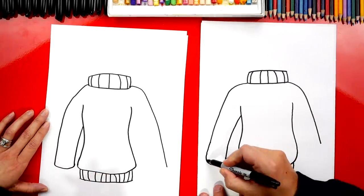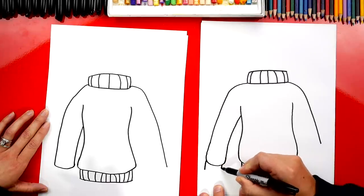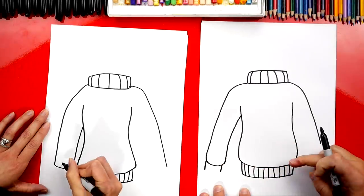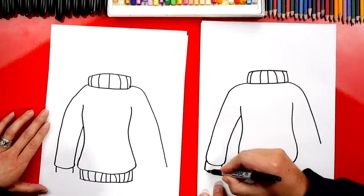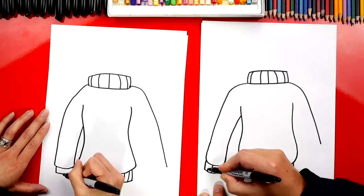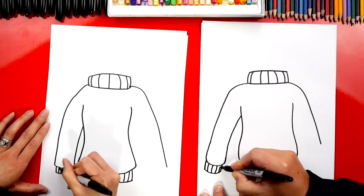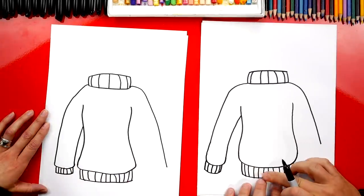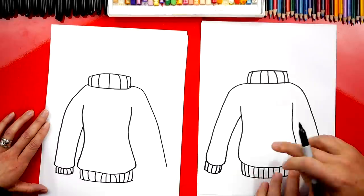And then let's draw the end of our sleeve, just like we did for the bottom. We'll draw two lines that come out and then connect those two lines. And then we can also add lines going the other direction for the texture, just like we did for the waist and also the collar.